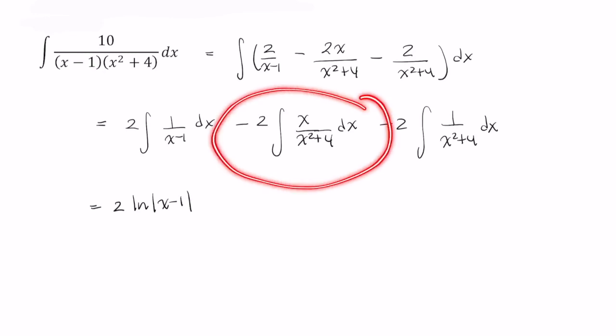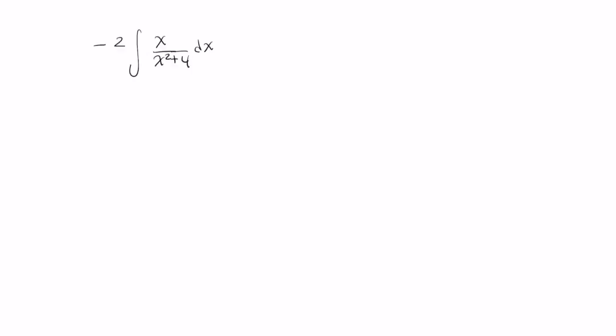Now this one we need a substitution for, so let's go ahead and take care of this one on a separate piece of paper as some scratch work. So we're going to let w equal x squared plus 4, then dw is equal to 2x dx, and I have 2x dx right here, so I'm going to get rid of all these three values and put in a dw in its place.